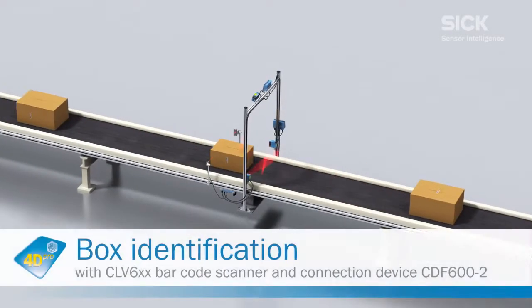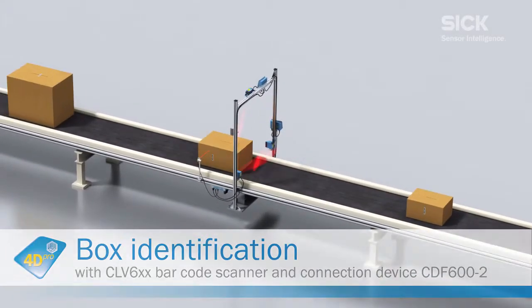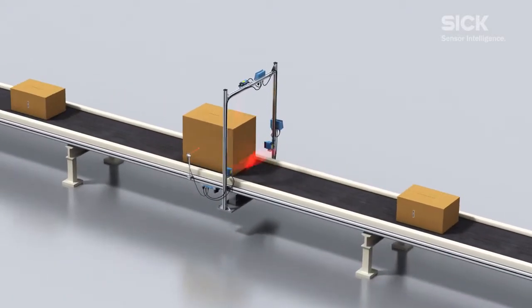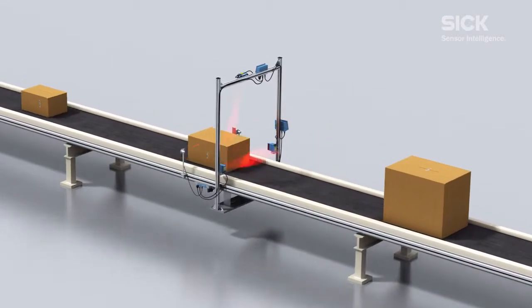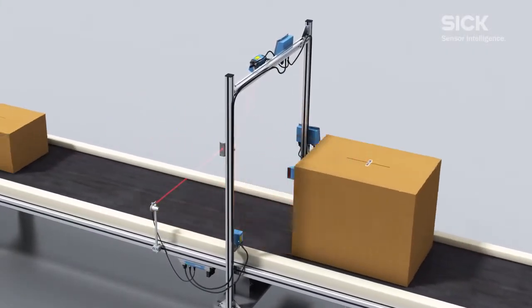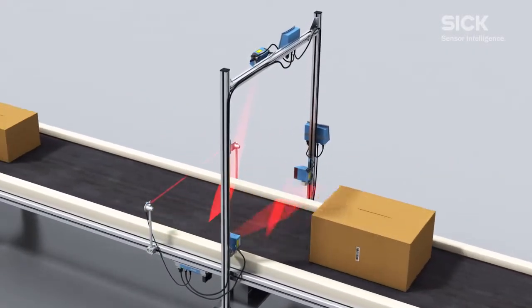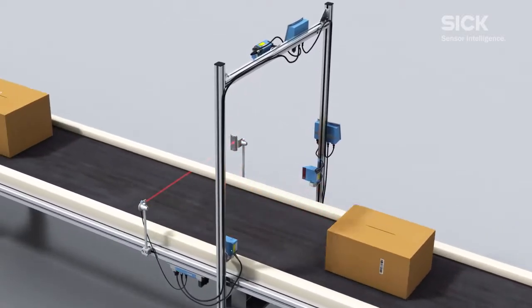For three-side reading, various laser scanners from the CLV-6 series can be interconnected via a SICK CAN network. To start read mode, the master scanner sends out a trigger signal to all interconnected scanners.